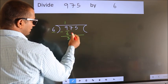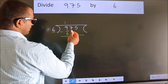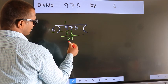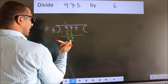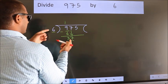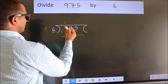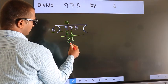After this, bring down the beside number. So 7 down. So 37. A number close to 37 in 6 table is 6 6s 36.